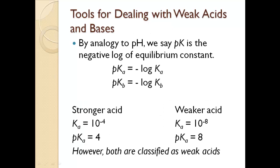The last tools to discuss are pKa and pKb. Whenever you put a 'p' in front of a value, it means you're taking the negative log of it. So pKa = −log(Ka) and pKb = −log(Kb). For example, if Ka = 10⁻⁴, then pKa = 4; for a weaker acid with Ka = 10⁻⁸, pKa = 8. Both are still classified as weak acids — the pKa scale is not the same as the pH scale.